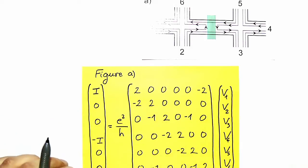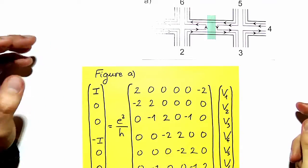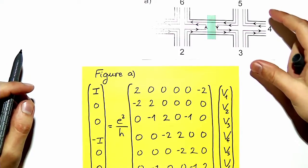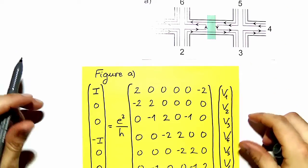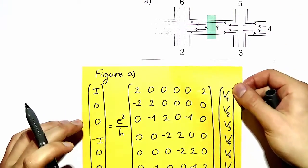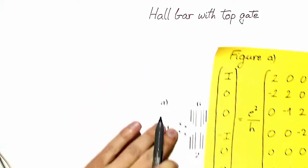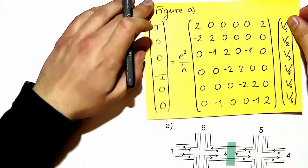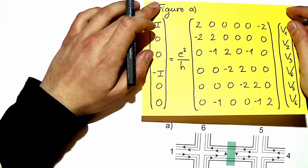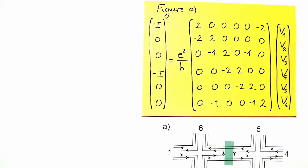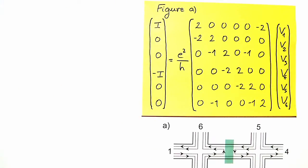Now we have a complete transmission matrix, and this gives us a system of equations that allows us to compute any voltage difference in the sample. Let's write down a few relations which will be useful to calculate Hall voltages, longitudinal voltages, and the two-terminal voltage.